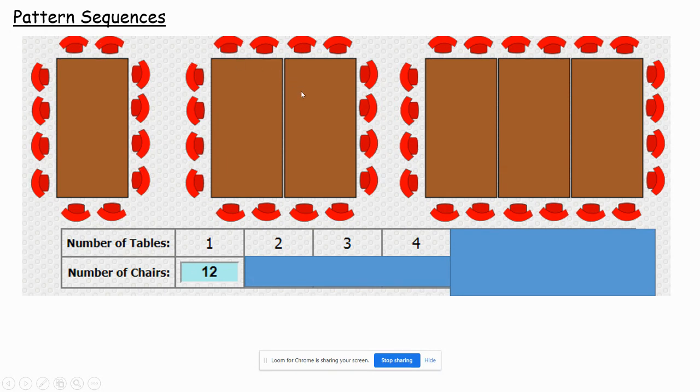Now if you add an extra table in, you can get some more chairs around it. More people can sit down. So let's just count how many we've got. That's 16 chairs. So 16 chairs around the two tables.